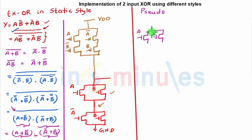This is my A in parallel to B bar. This entire thing is in series to A bar and B, which are in turn parallel to each other. This is ground, so this is my pulldown network of pseudo-NMOS.